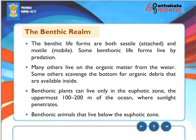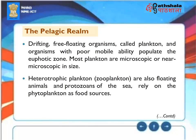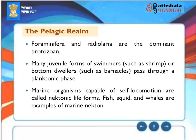The Pelagic Region: The pelagic realm consists of all ocean water covering the benthic realm. It is divided horizontally into the neritic (fertile near-shore) province and the oceanic province, and vertically into the euphotic (photic) zone and the aphotic (without-sunlight) zone. Drifting, free-floating organisms called plankton populate the euphotic zone; most plankton are microscopic or near-microscopic. Heterotrophic plankton or zooplankton are floating animals and protozoans, relying on phytoplankton as food sources. Foraminifera and radiolaria are the dominant protozoans. Marine organisms capable of self-locomotion are called nektonic life forms, such as fish, squid, and whales.